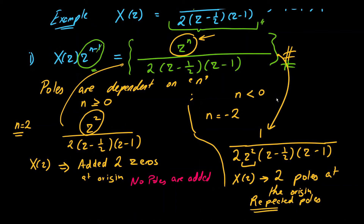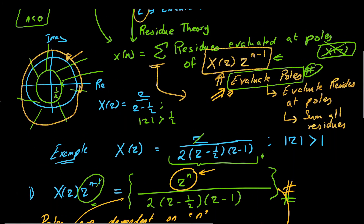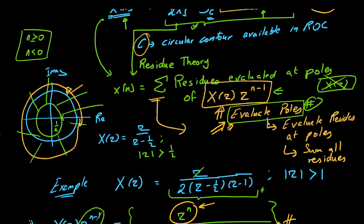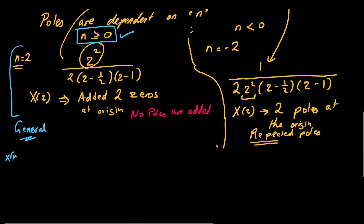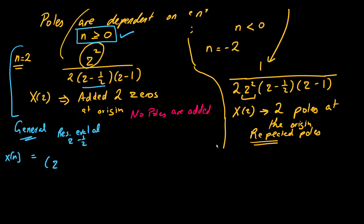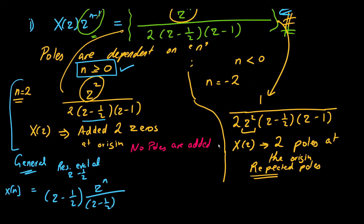Returning to the general case n ≥ 0: x(n) is evaluated as the sum of residues at the poles. The residue at z = 1/2 is computed as (z − 1/2) · z^n / [2(z − 1/2)(z − 1)] evaluated at z = 1/2, which cancels the (z − 1/2) factor and evaluates the remainder at z = 1/2.